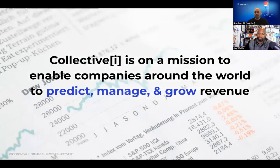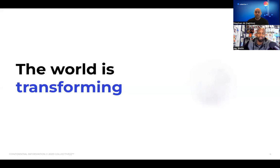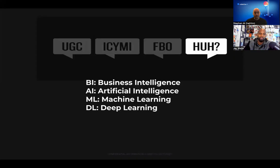A little bit of background: Collective Eye is focused on enabling companies to predict, manage, and grow revenue. We predominantly use neural nets to do this. The world is absolutely transforming — it is not minor. When you think about data, you hear all these different terms, and oftentimes people use them all interchangeably, which can be super confusing. I'm going to go fast through BI, AI, and ML, because they're relatively useless for this discussion, but I'm going to explain them.